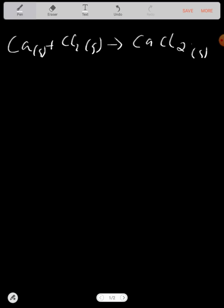How do we balance? On the left side we have calcium and chlorine. On the right side we have calcium and chlorine. How many calcium atoms do we have this side? One. How many chlorine atoms do we have this side?